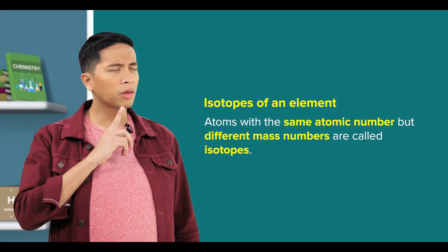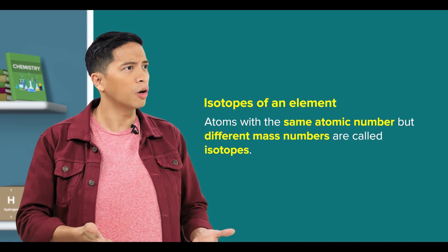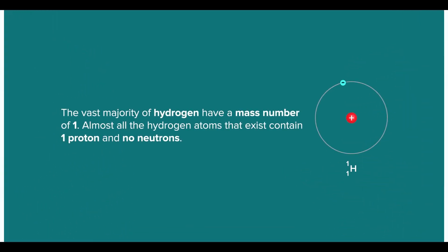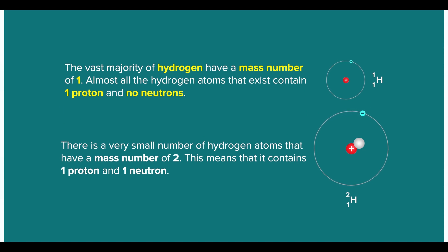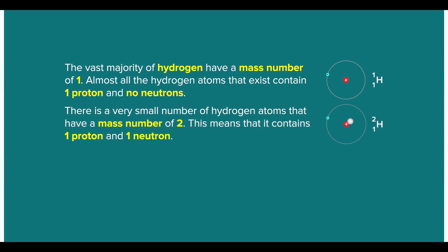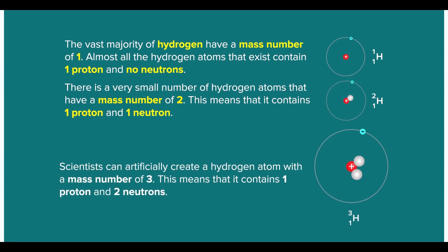There are real examples of isotopes. The vast majority of hydrogen have a mass number of one, meaning almost all hydrogen atoms contain one proton and no neutrons. However, a very small number of hydrogen atoms have a mass number of two — one proton and one neutron. Scientists can even artificially create a hydrogen atom with a mass number of three, meaning one proton and two neutrons.